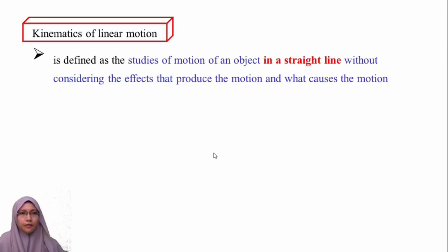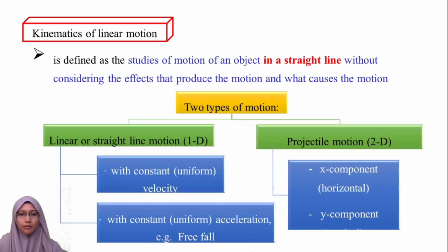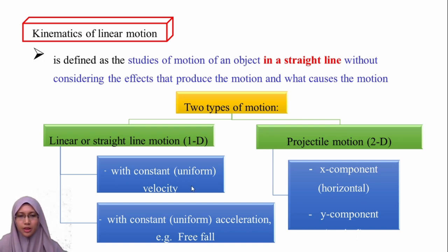Kinematics of linear motion is defined as the study of motion of an object in a straight line — the straight line refers to linear motion — without considering the effects that produce the motion or what causes the motion. There are two types of motion: one-dimensional motion, which involves one axis, and two-dimensional motion, which involves the x and y axes.